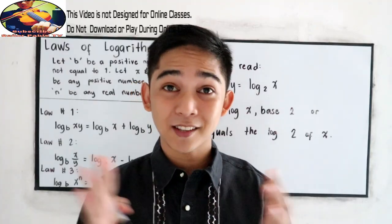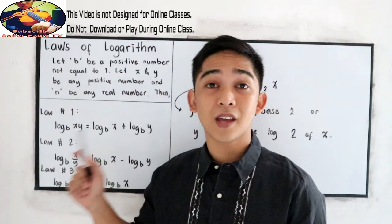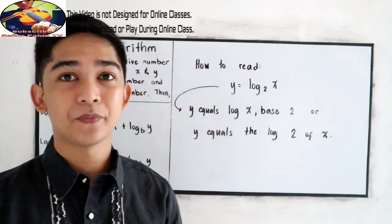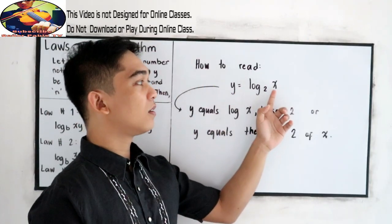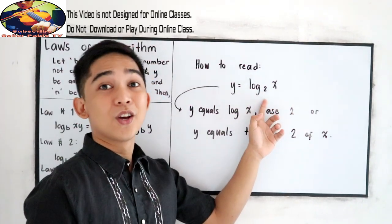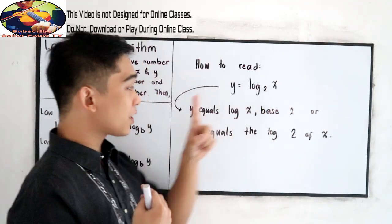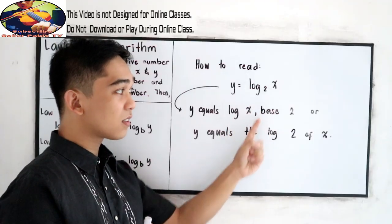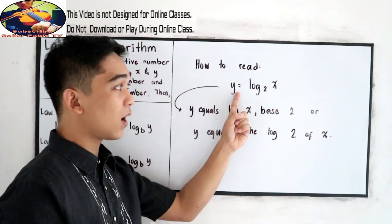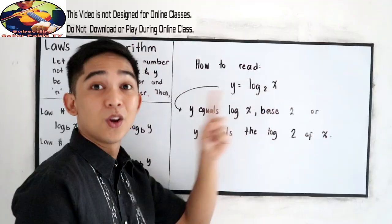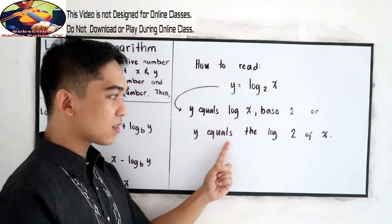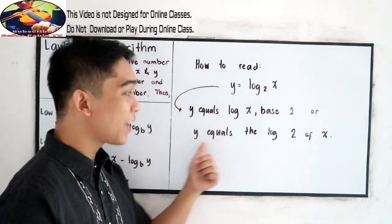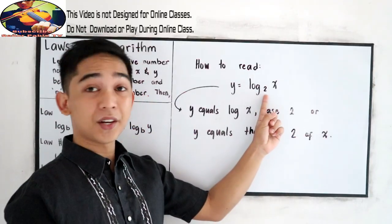Let's start with Laws of Logarithm. Since this is a new topic for Grade 11, let us first discuss how to read a logarithm. Let's say we have y equals log x base 2. There are two ways to read it: the first is 'y equals log x base 2,' and the second is 'y equals the log base 2 of x,' where 2 is our base.